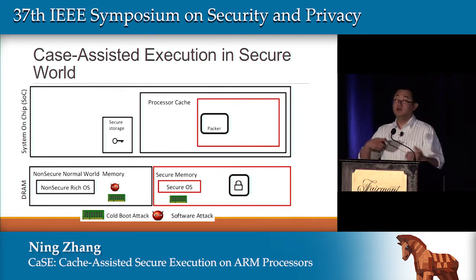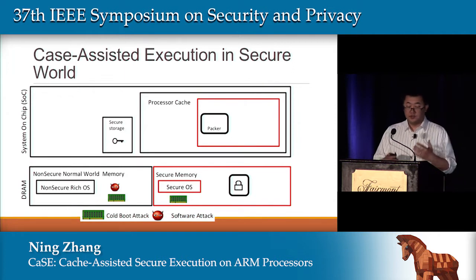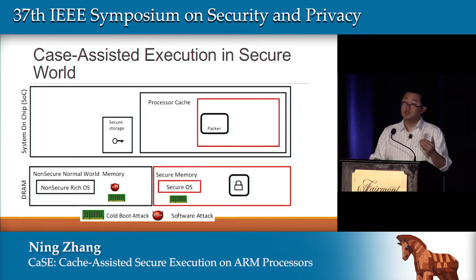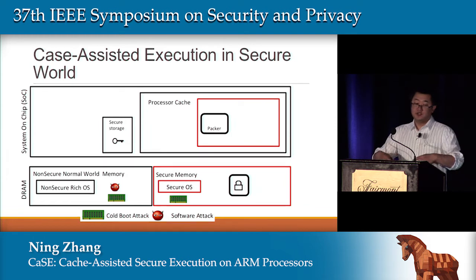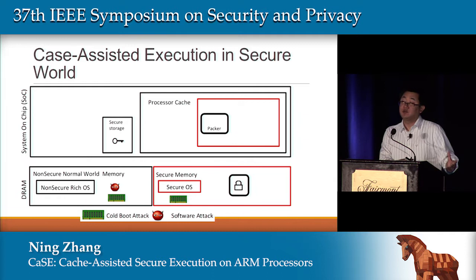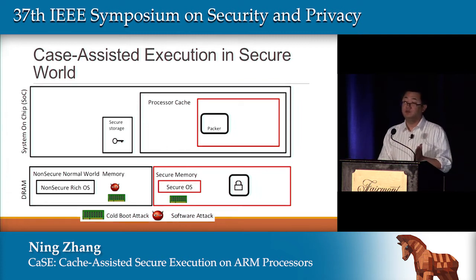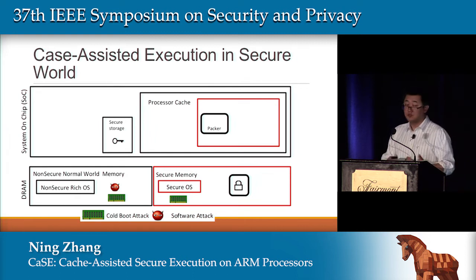Here is an overview of how the system works. We designed two execution modes: secure mode and non-secure mode. In secure mode, we use the secure cache as the execution environment memory. In non-secure mode, we use the non-secure cache. There are pros and cons to each, which we discuss further in the paper. Let's go into how secure mode works.